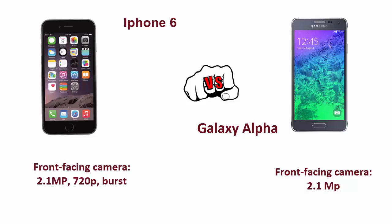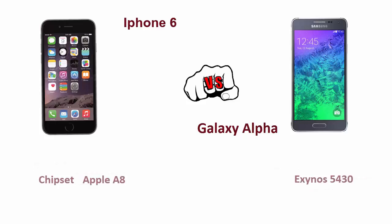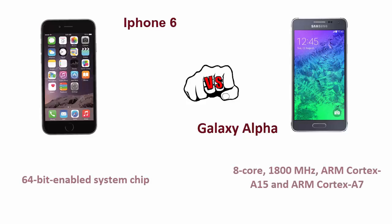When it comes to the chipset, the Apple A8 is used in the iPhone 6 whereas the Exynos 5430 is used in the Galaxy Alpha. The iPhone 6 has a 64-bit enabled A8 chipset whereas the Galaxy Alpha has an octa-core chipset.